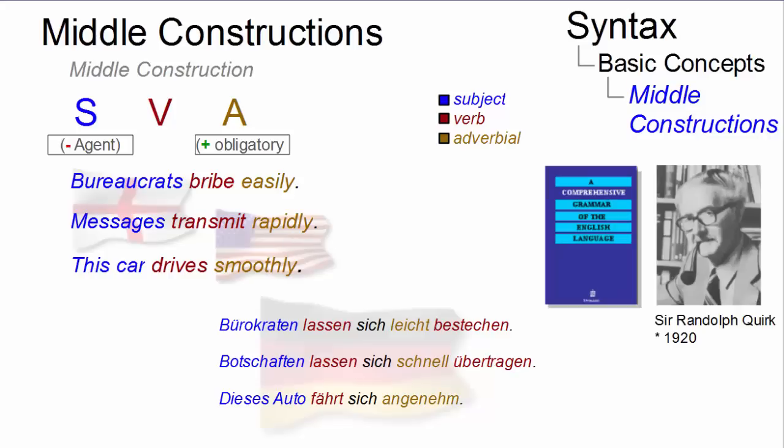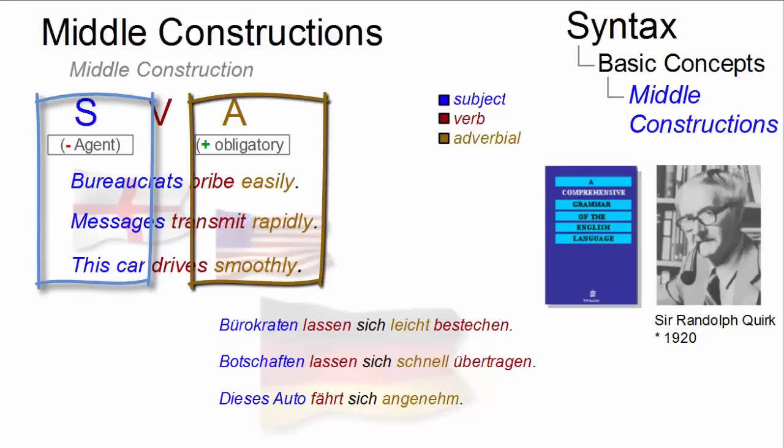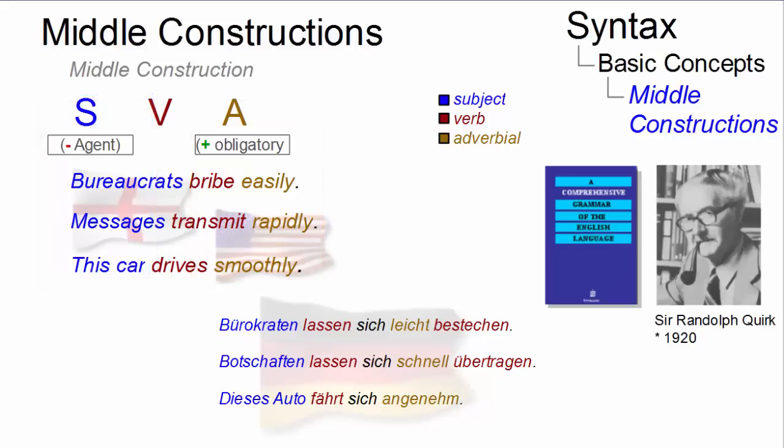Middle constructions are generally characterized as generic sentences which have a non-agentive subject and an obligatory adverbial. Let us look at an example.